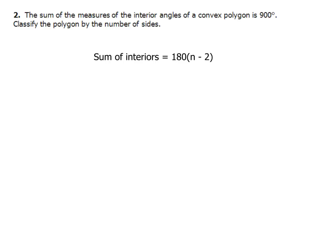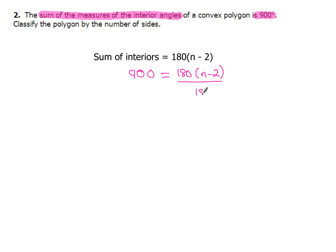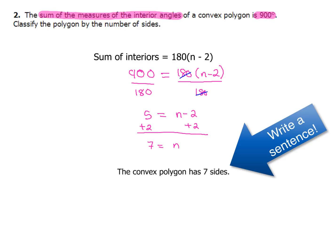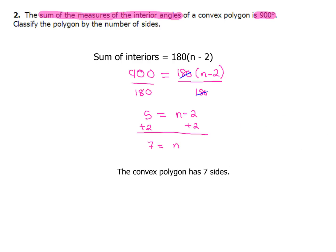For example two, we're told the sum of the measures of the interior angles of a convex polygon is 900 degrees, and we need to figure out how many sides there are. We substitute 900 for the sum, giving us 900 = 180(n − 2). Dividing both sides by 180 gives 5 = n − 2. Adding 2 to both sides gives n = 7. The convex polygon has 7 sides.